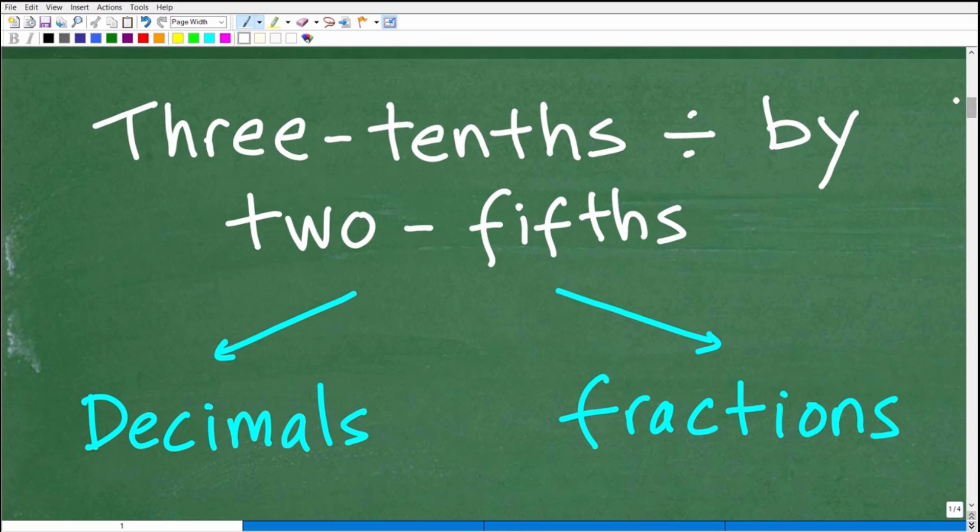Now, so first of all, we need to recognize that we're dealing with decimals and fractions, right? So this right here is 3 tenths. Okay, now, if you just kind of say this out loud, 3 tenths. What does that sound like? Does that sound like a fraction or a decimal? Well, actually, you can think of it in both ways, right?